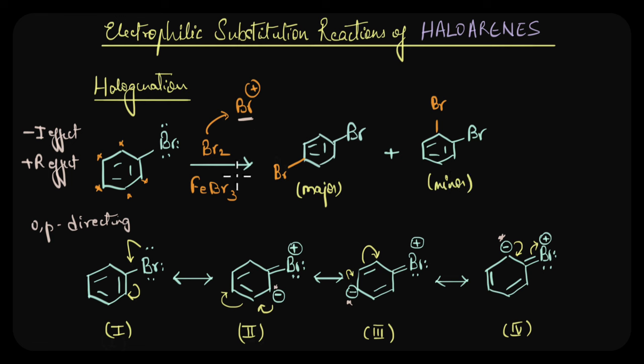So this can be extended to all other electrophilic substitution reactions like sulfonation or nitration or Friedel-Crafts reactions where the halogen atom will direct the incoming electrophile to ortho and para positions.